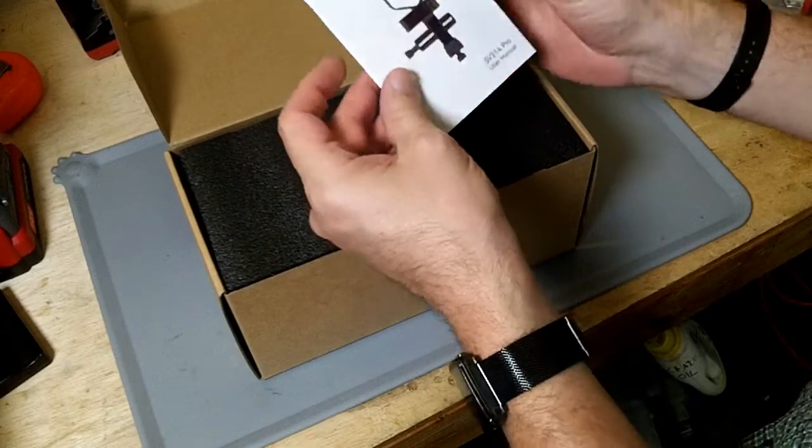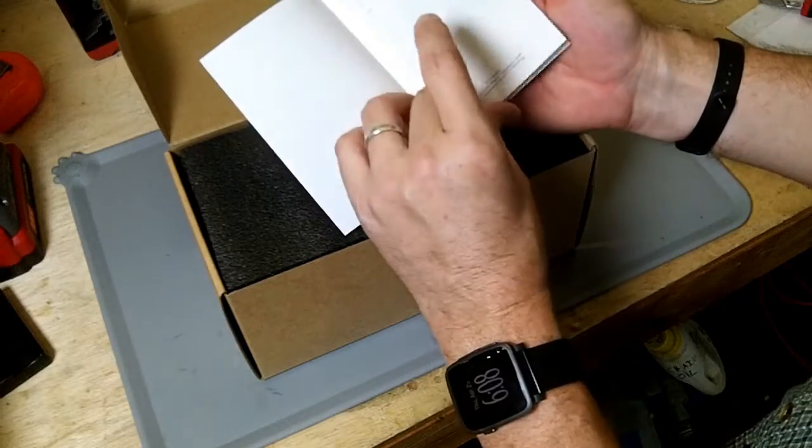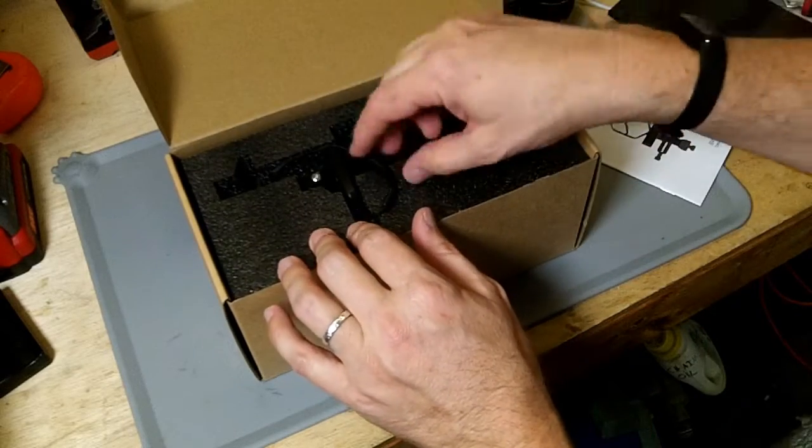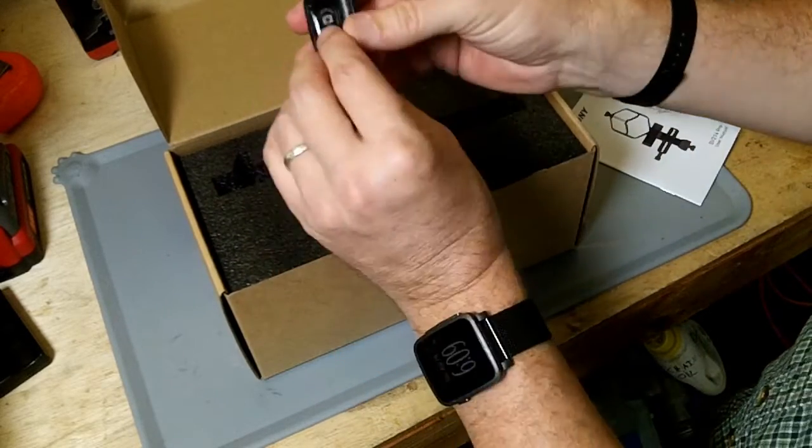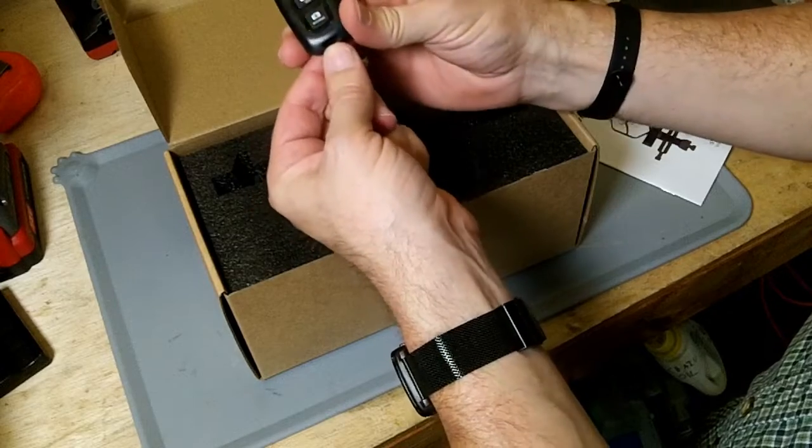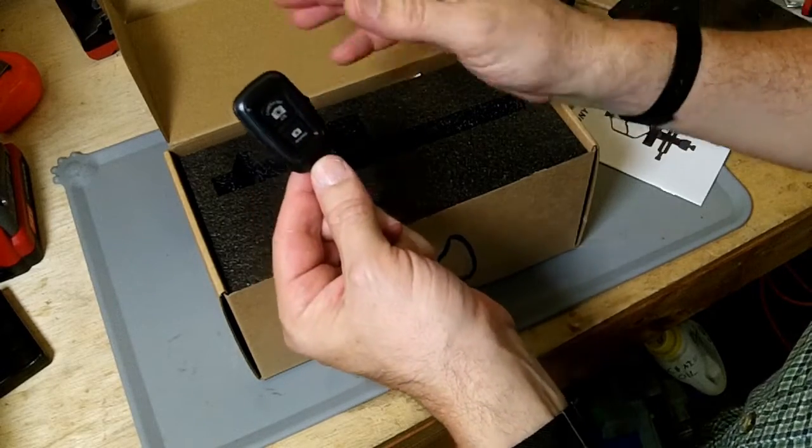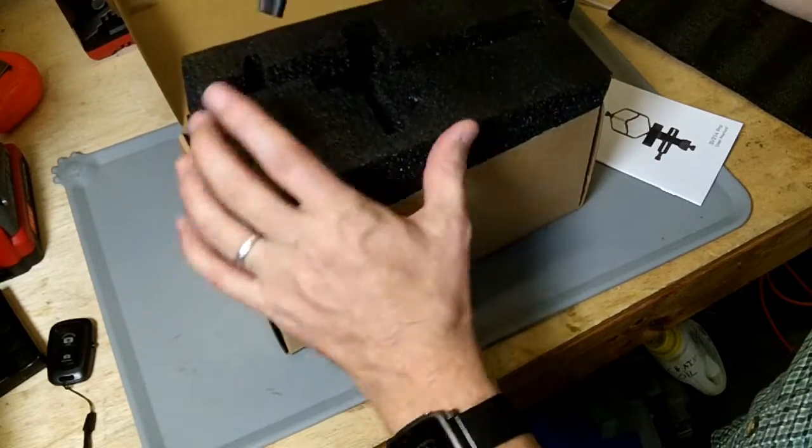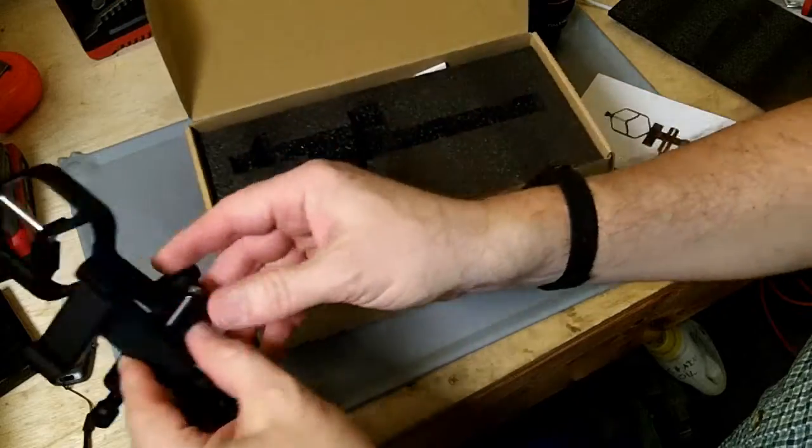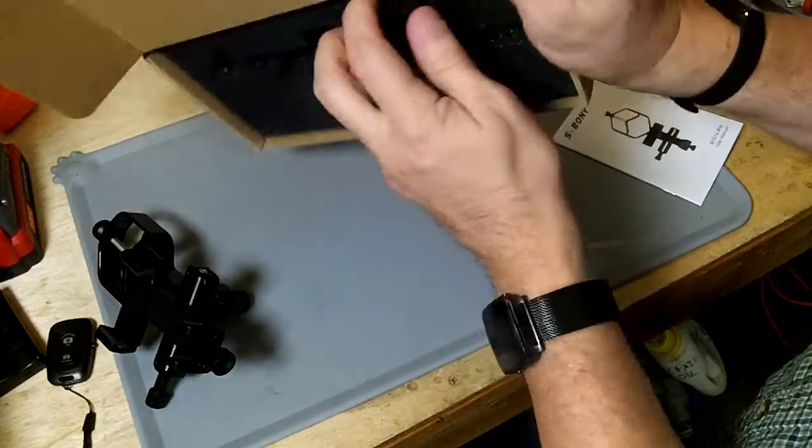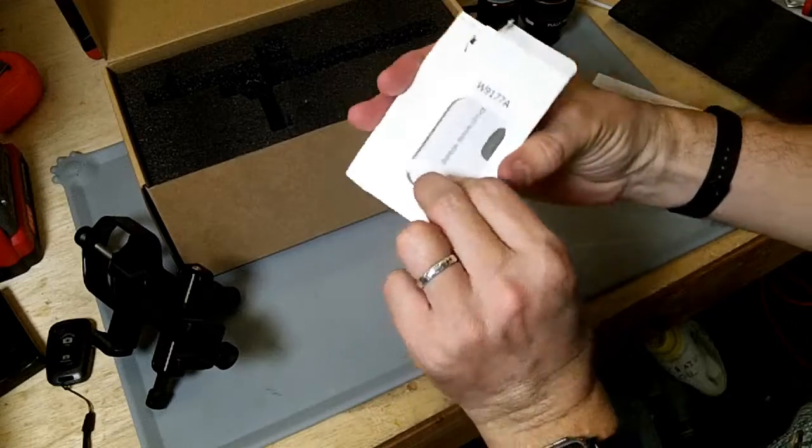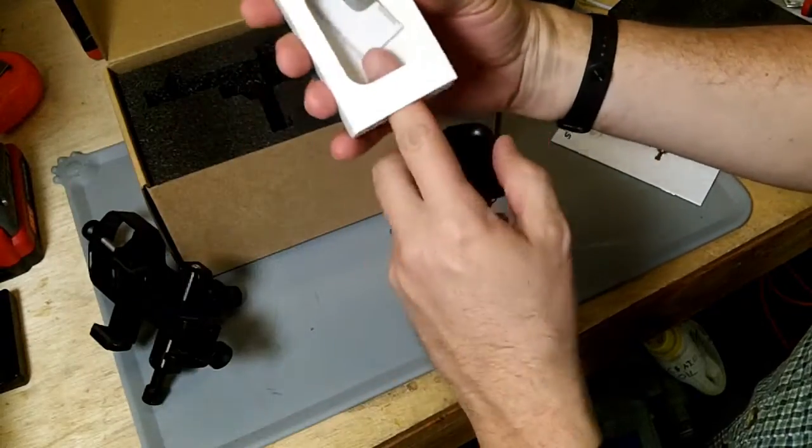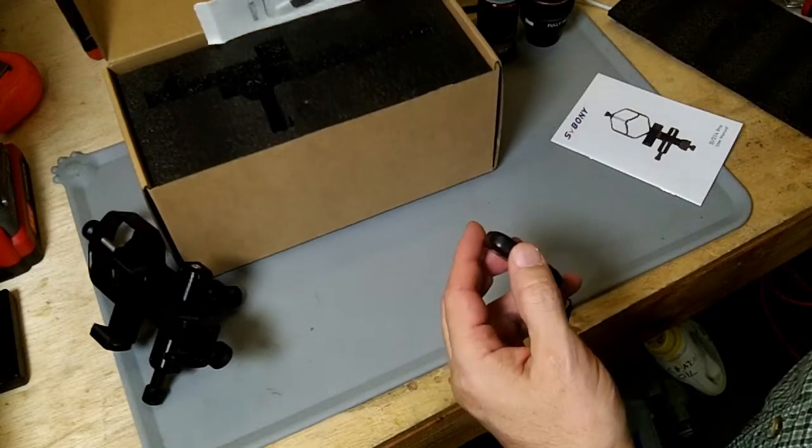In the box we get the user's manual here and a large piece of foam. There's a Bluetooth camera remote shutter so that you don't jiggle your setup while you're taking pictures. And then inside of this large piece of foam is the device itself.